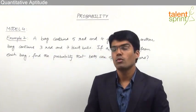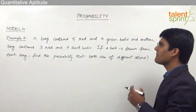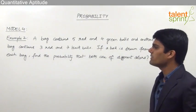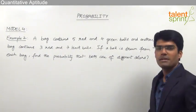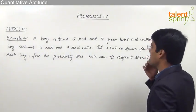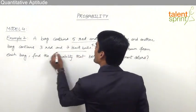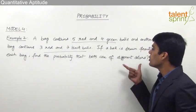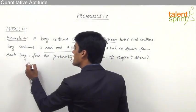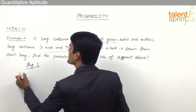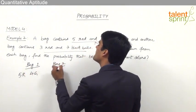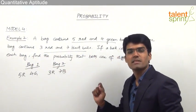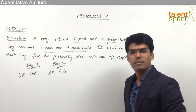Let us now take another interesting example from Model 4. A bag contains 5 red and 4 green balls, and another bag contains 3 red and 7 black balls. If a ball is drawn from each bag, find the probability that both are of different colors. We have to pick one ball from each bag and find the probability that both are of different colors.